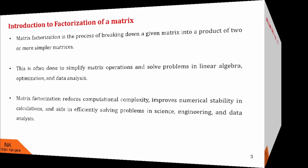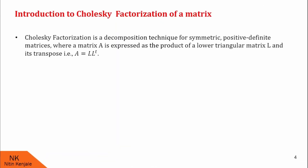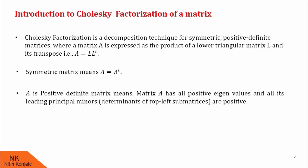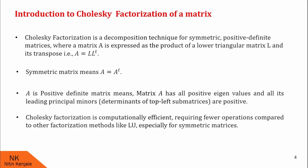Now let us proceed to see introduction to Cholesky Factorization. Cholesky Factorization is a decomposition technique for symmetric positive definite matrices where a matrix A is expressed as a product of a lower triangular matrix L and its transpose. That is, matrix A can be written as L into L-transpose, where L is a lower triangular matrix and L-transpose is the transpose of L. Symmetric matrix means A is equal to A-transpose. When we say A is a positive definite matrix, it means matrix A has all positive eigenvalues and all its leading principal minors — that is, determinants of top-left sub-matrices — are positive. Also note that Cholesky Factorization is computationally efficient, requiring fewer operations compared to other factorization methods like LU factorization, especially for symmetric matrices.